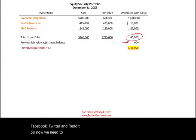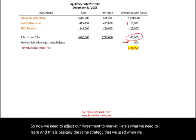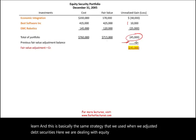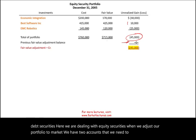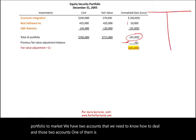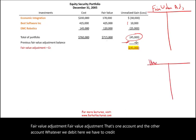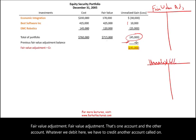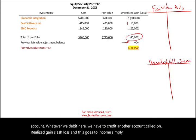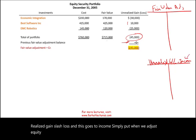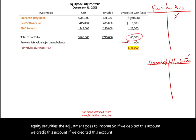Now we need to adjust our investment to market. There are two accounts we need to know how to deal with. One is called Fair Value Adjustment, and the other is Unrealized Gain/Loss, which goes to income. Simply put, when we adjust equity securities, the adjustment goes to income. If we debit Fair Value Adjustment, we credit Unrealized Gain/Loss. If we credit Fair Value Adjustment, we debit Unrealized Gain/Loss.